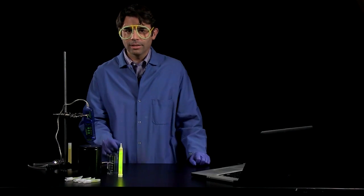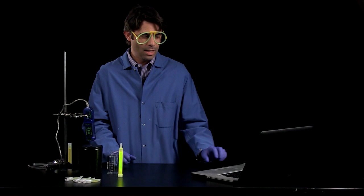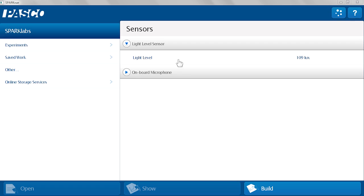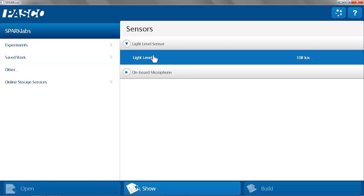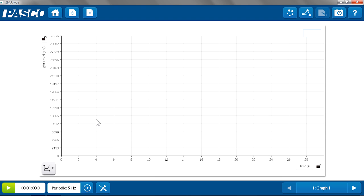To study that using our light level sensor, we're going to do that in a darkened vessel, and we're going to use SparkView. I'm going to set up SparkView to show the light level on a graph.